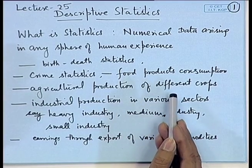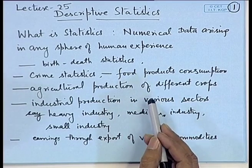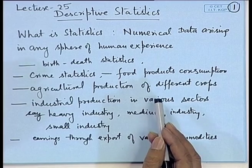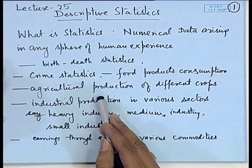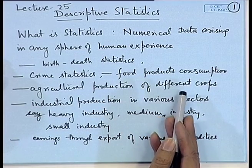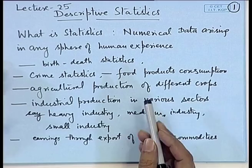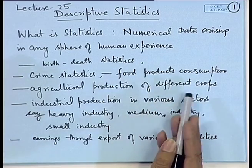How much should be released in the market? What should be the pricing? Whether there should be any import of these products from other countries to meet the shortfall, or if there is a surplus, should the government be encouraging exports? The agricultural production data is one of the most important data kept by the government.